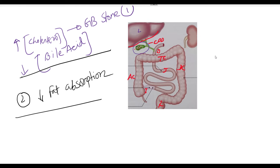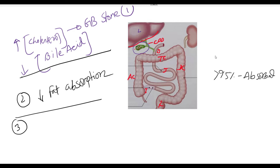Consequence number three — look again at the diagram. When the bile acid and bile salt are not absorbed from the small gut, they pass in high amounts into the large gut. Normally, more than 95 percent of bile acid and bile salt are absorbed, and less than 5 percent are excreted through stool.